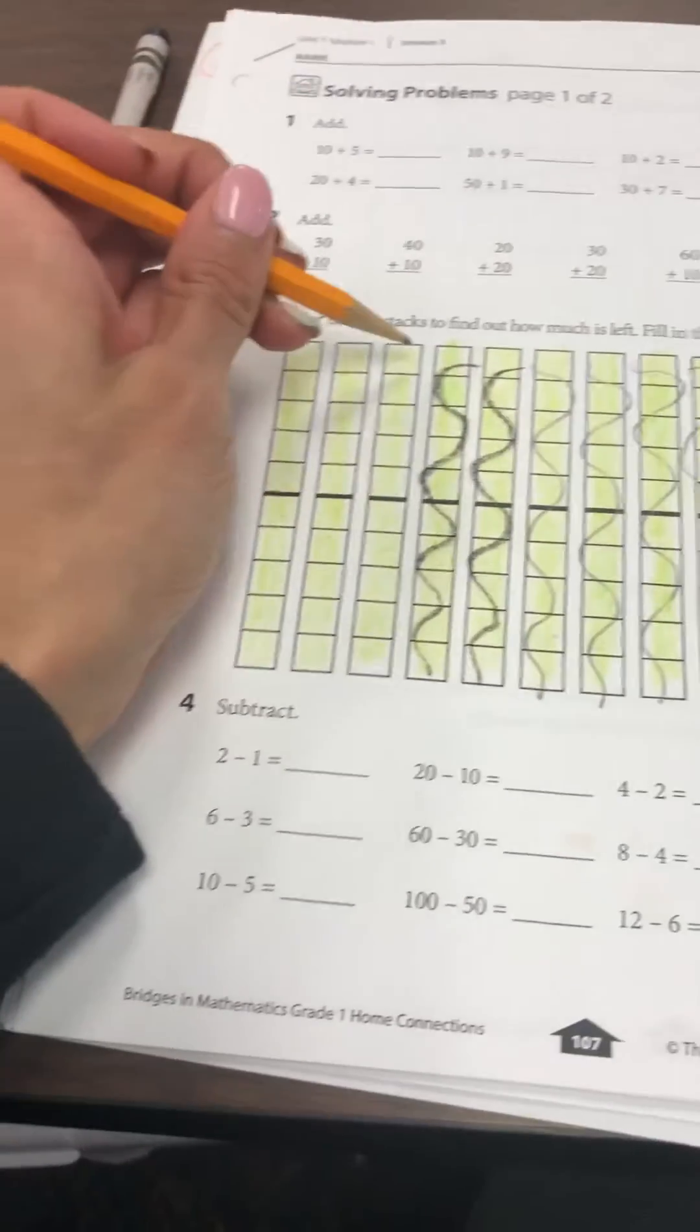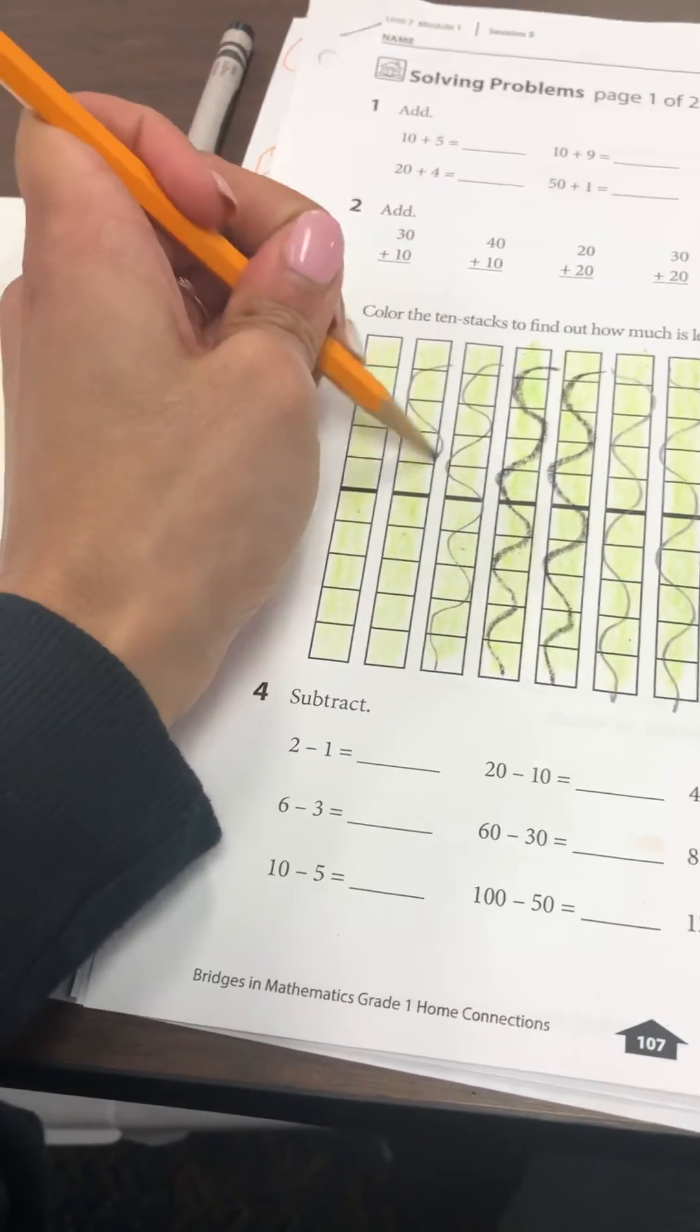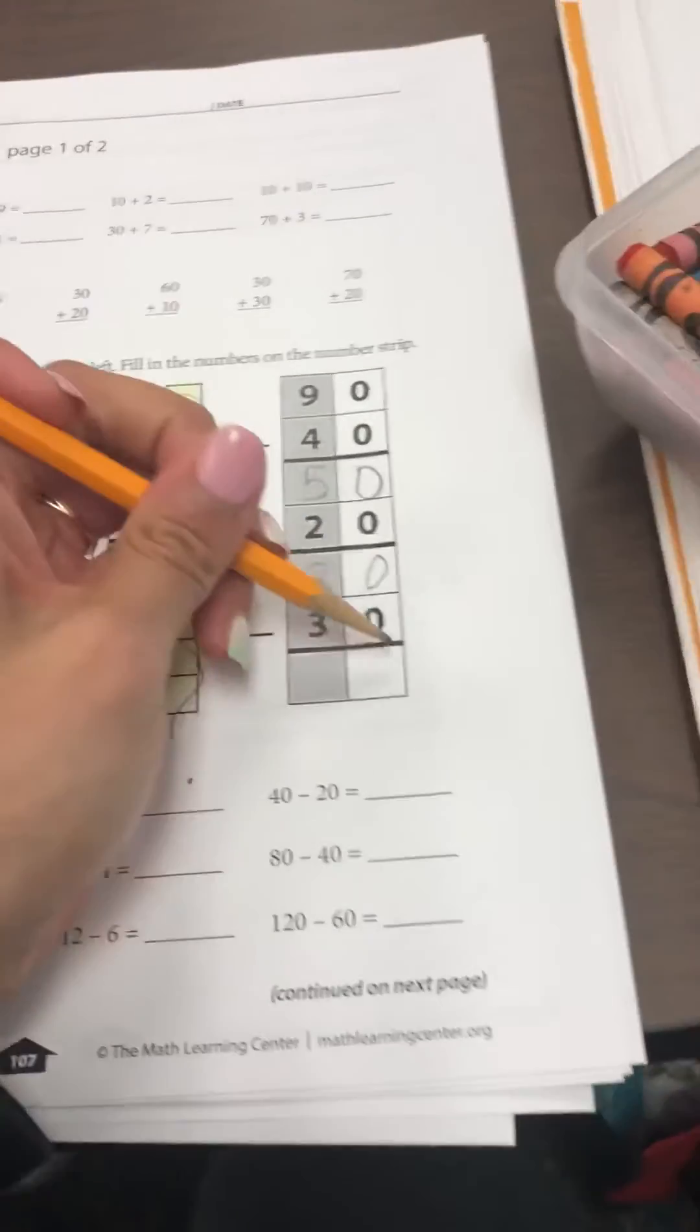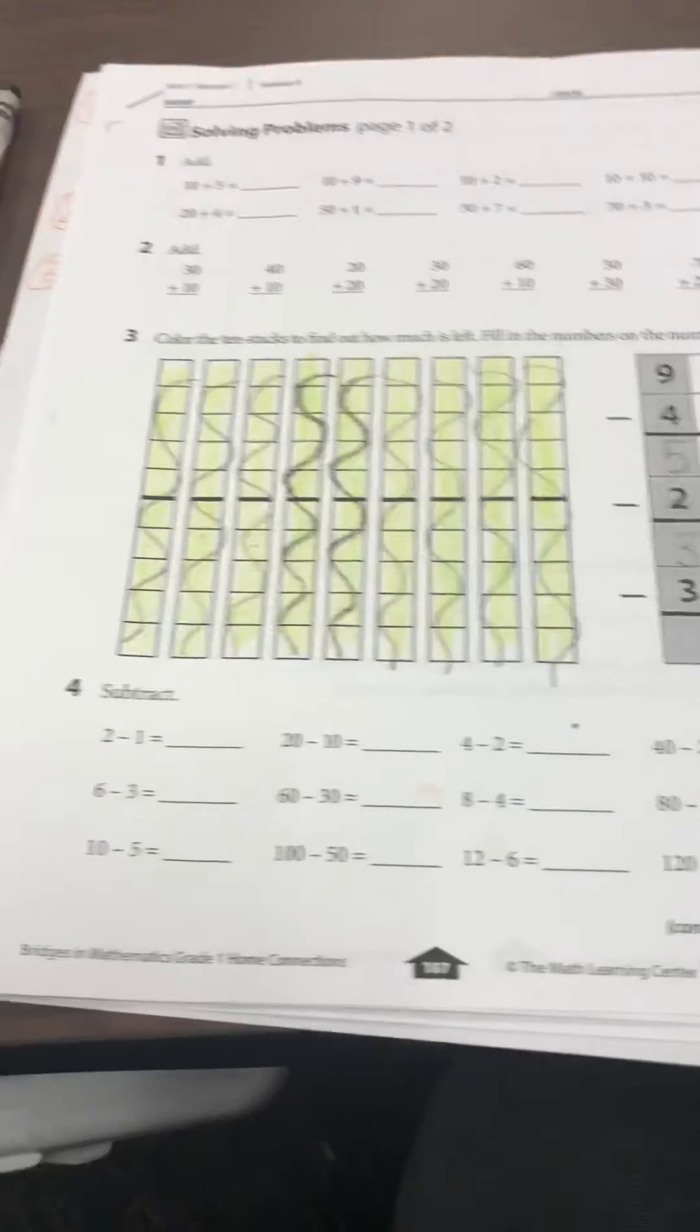And then our final answer, 30 minus 30. So we are going to cross off 30 more: 10, 20, 30. Your final answer should be zero. I hope this helps.